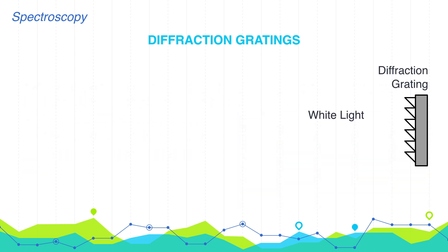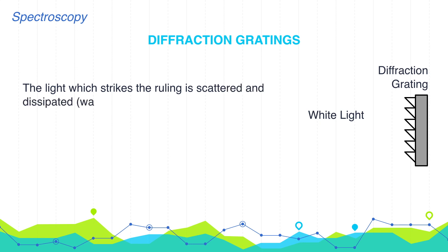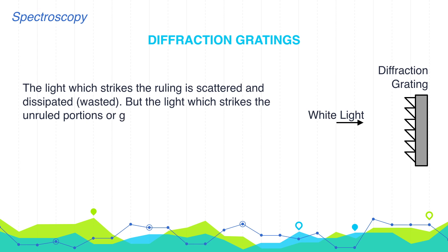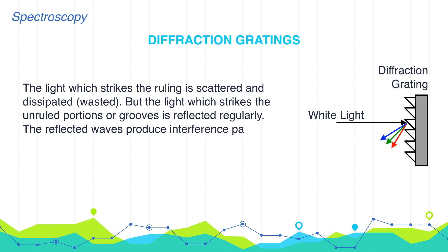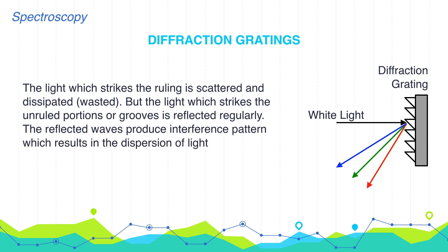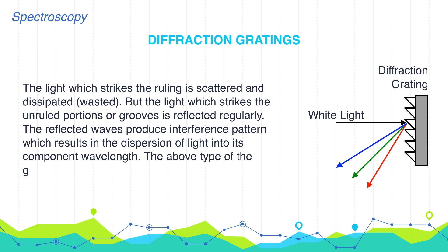The light which strikes the ruling is scattered and dissipated or wasted. But the light which strikes the unruled portion or grooves is reflected regularly. The reflected waves produce an interference pattern, which results in the dispersion of light into its component wavelengths. This type of grating is known as a reflection grating.